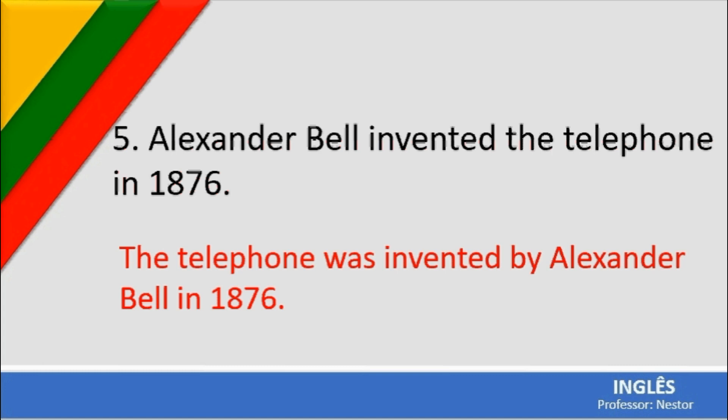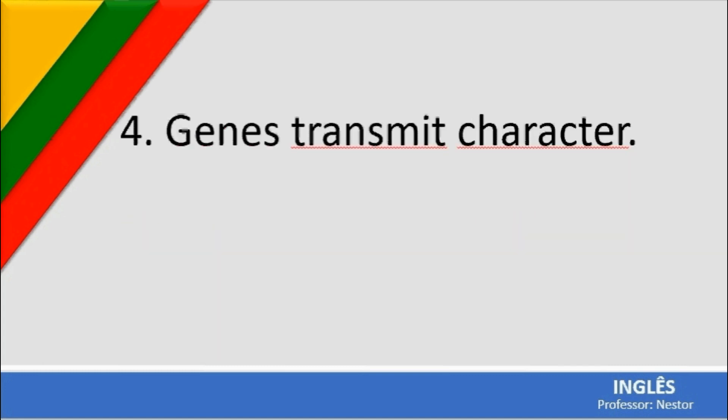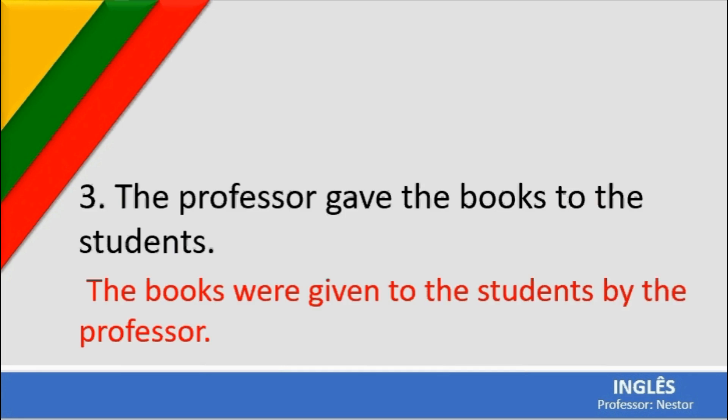An important note: for all passive voice constructions, you use the past participle — not just the simple past. For regular verbs, the past participle ends in '-ed.' For irregular verbs like 'gave' — past participle 'given' — you need to consult the irregular verb table at the back of your textbook. This applies to all passive voice conversions.